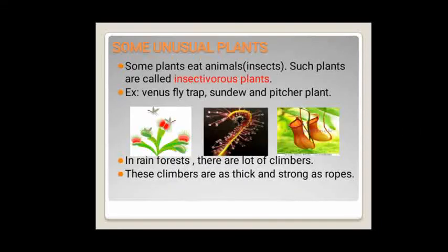The last type is unusual plants. We usually find that animals eat plants, but in this case the plants are eating animals — specifically some types of insects. Such plants are called insectivorous plants. In Venus flytrap plants, the leaves are folded into two halves. When an insect sits on the leaf, it will close the leaves so the insect is killed. This is the mechanism found in Venus flytrap. In rainforests, there are also a lot of climber plants, which are as thick and strong as ropes.